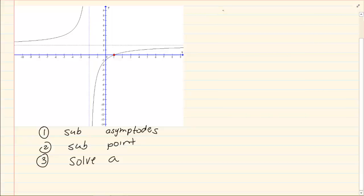So if we have the following equation, f of x is equal to a over x minus p plus q. First we're going to substitute our asymptotes.